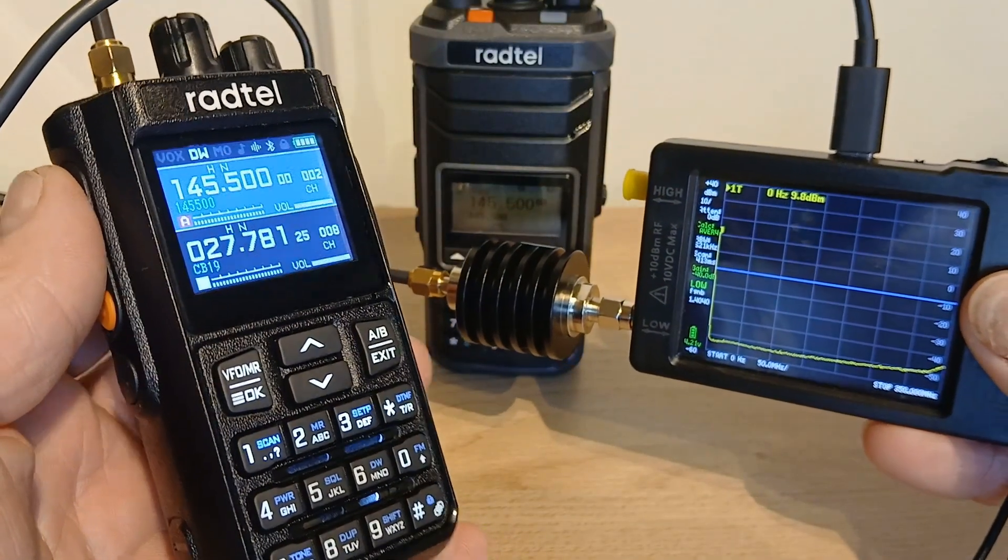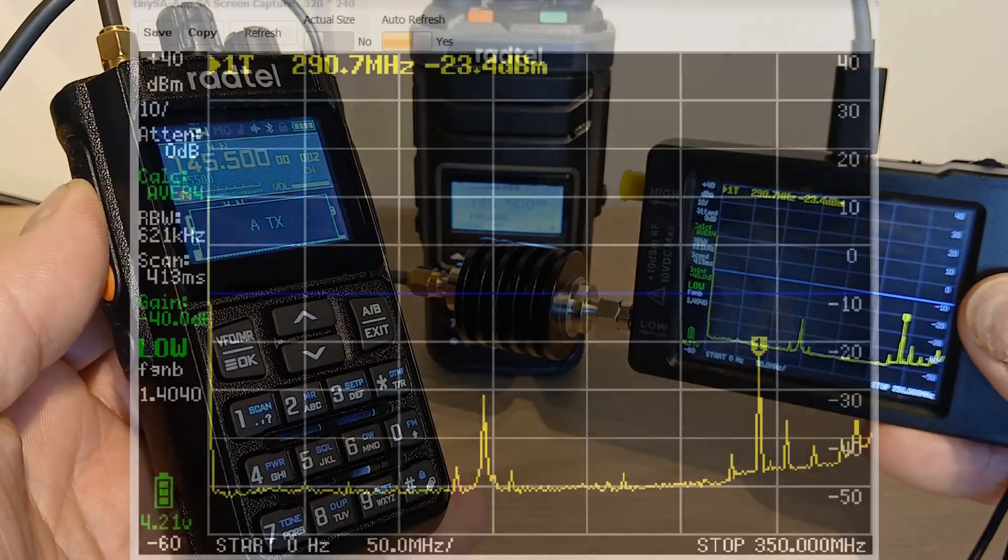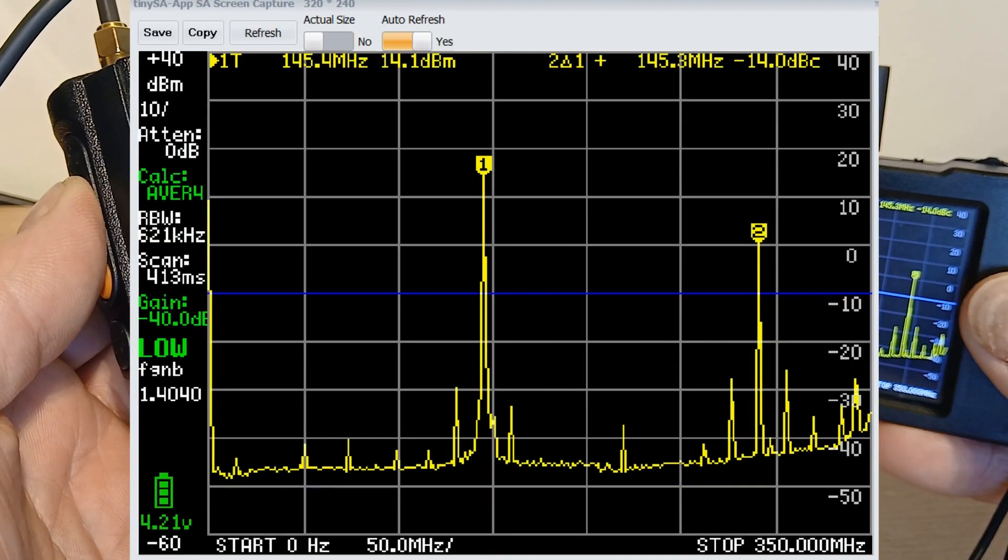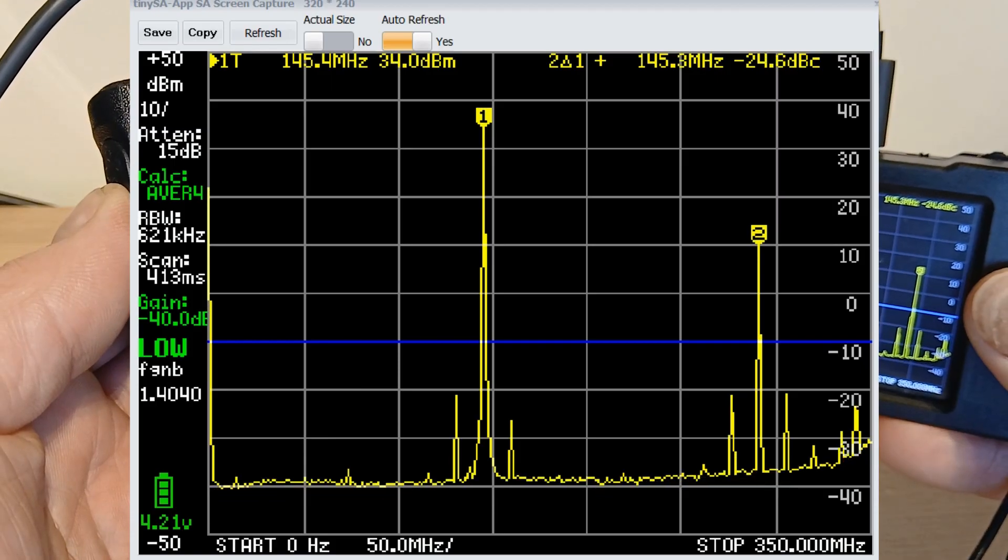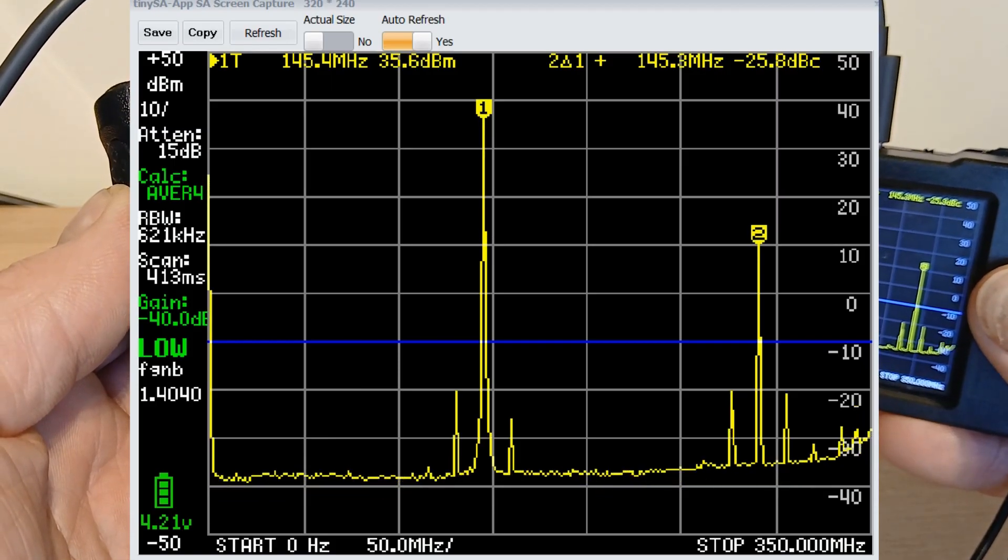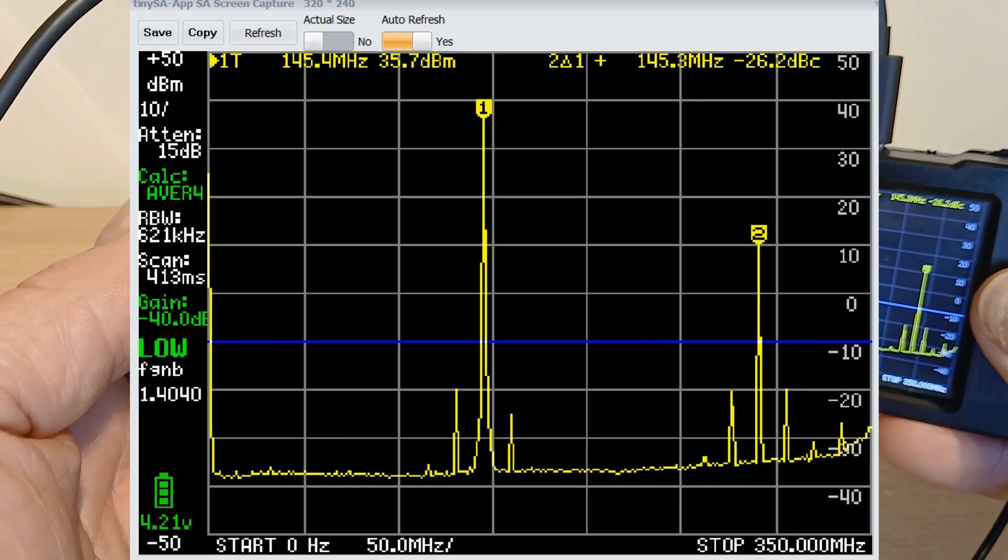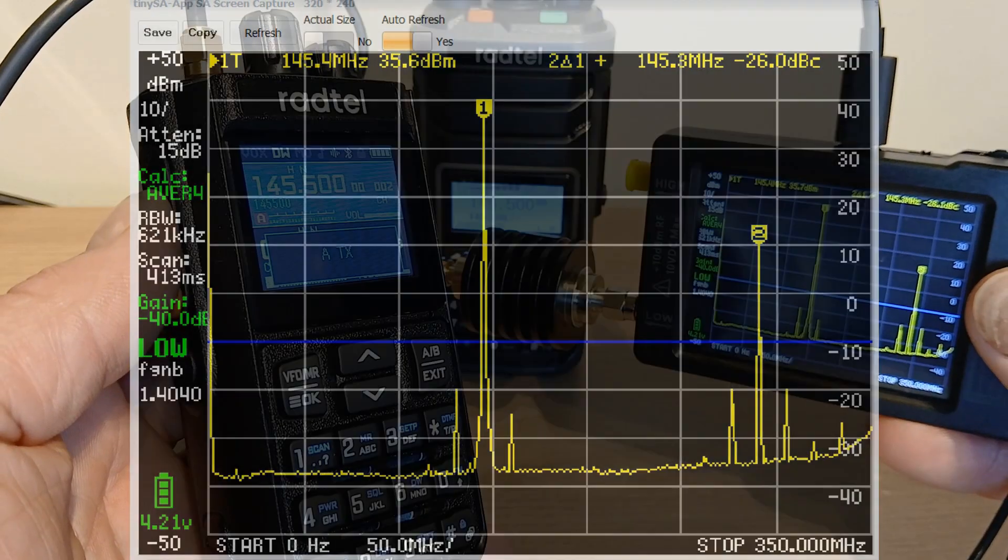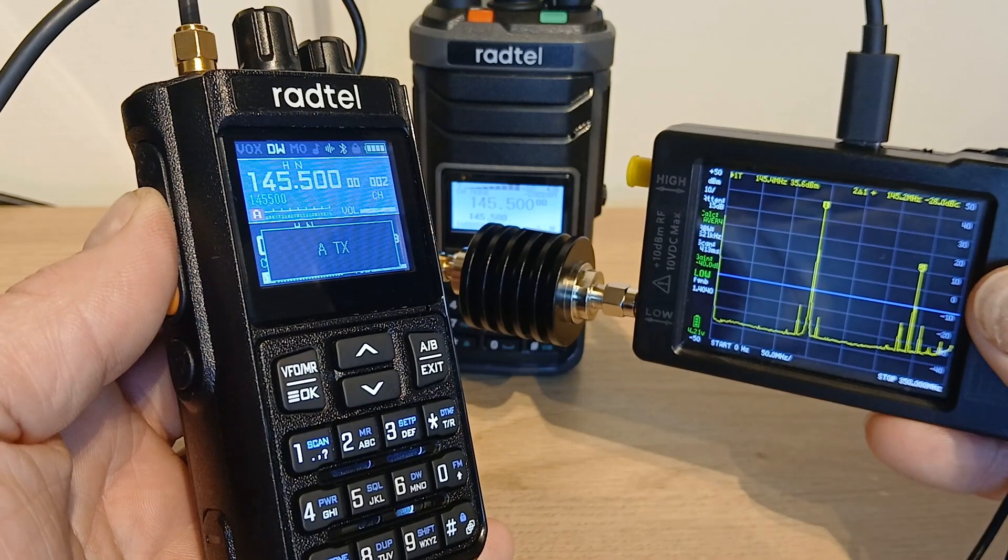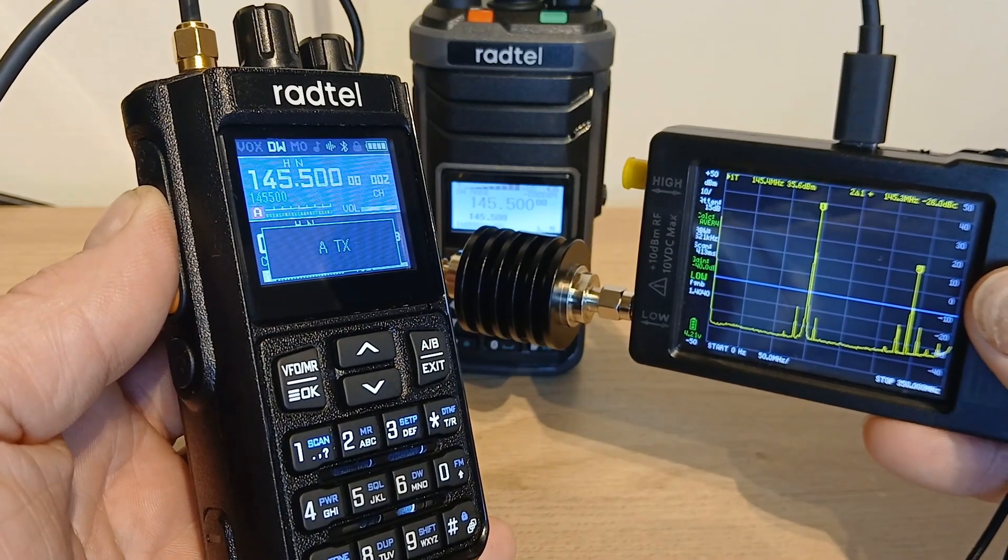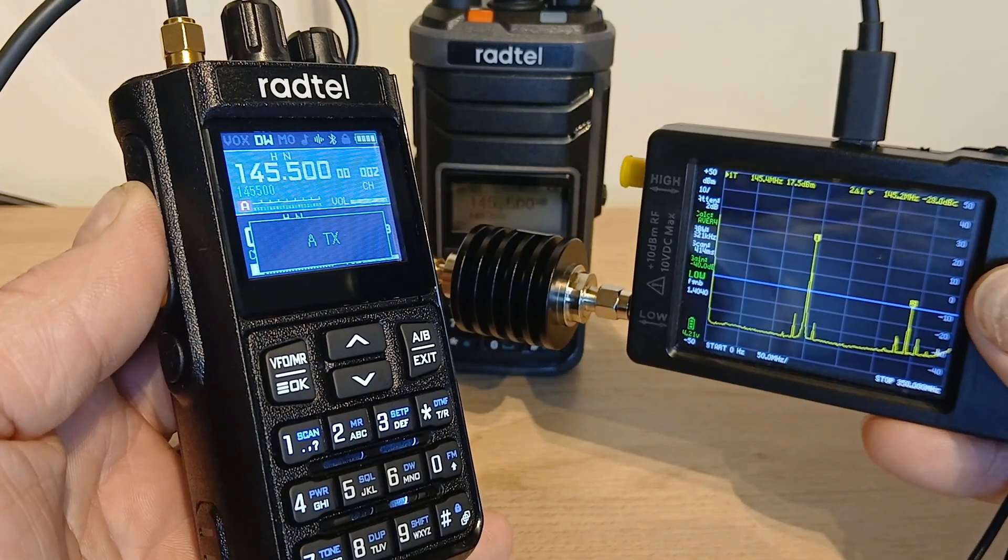And then finally, let's move on to the two Radtels, starting with the Radtel RT900. And again, as you can see, unfortunately the RT900 has failed. The fundamental is 35 decibels above and then the first harmonic is negative 26. So yeah, we're looking for negative 40 or more and we've only got negative 26. Not quite as bad as the Baofengs, but still a fail unfortunately for the Radtel RT900.